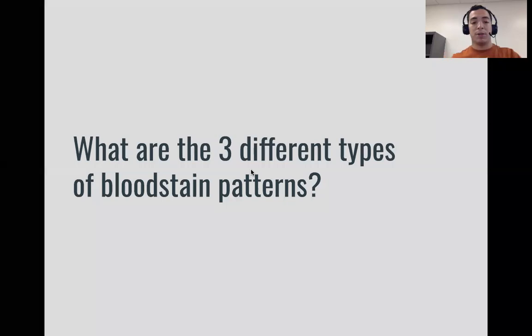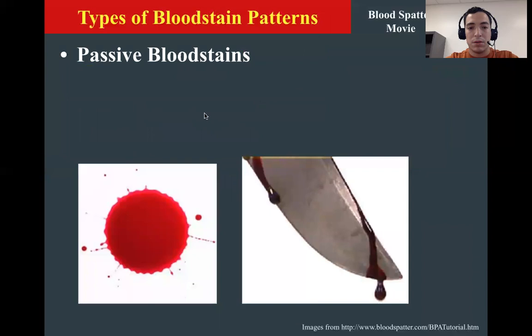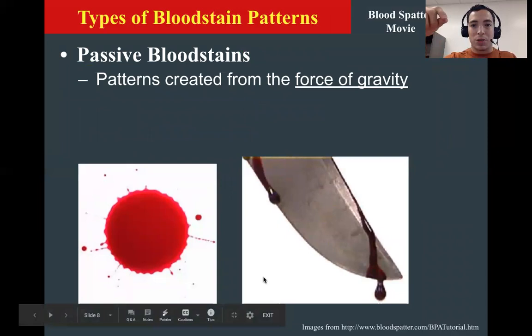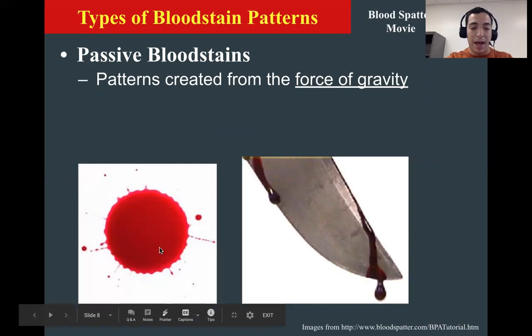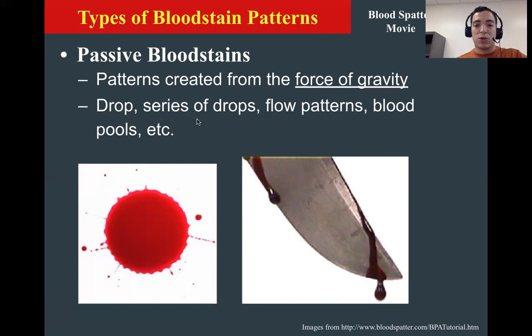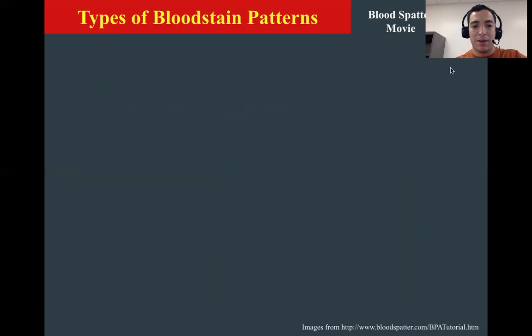So what are the three different types of bloodstain patterns? The first one we're going to cover is a passive bloodstain. This is created from the force of gravity. For example, we have a knife that has blood on it, it starts dripping — gravity's bringing it down. Once it falls, it's going to create a parent drop that looks very round; it just drips down, big, fat, and round. This comes from a series of drops, from blood flowing or blood pools. There's no force involved, just the force of gravity.